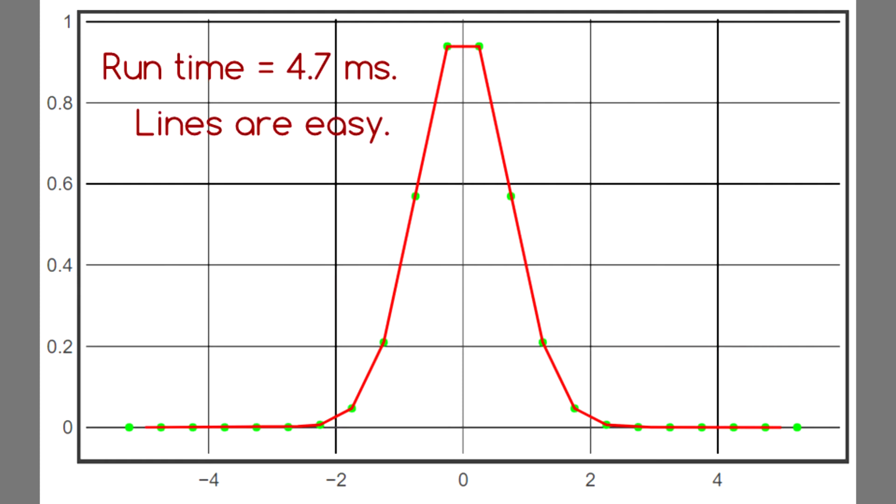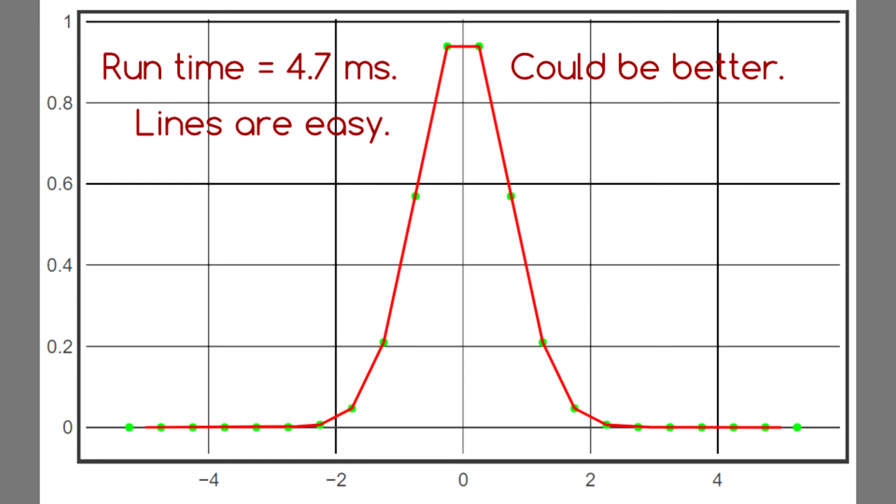Linear interpolation is fast and easy, so it's useful for quick and rough applications, but it's not the most accurate method in the world. Look at how it completely misses the maximum of the function. And notice that there's a kink at each data point where the slope suddenly changes.